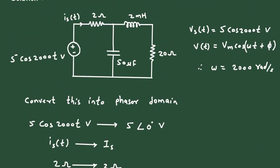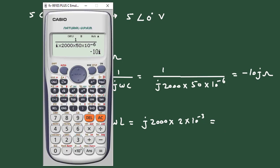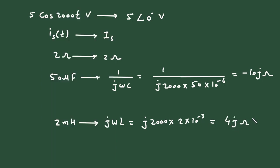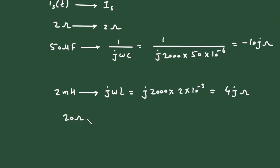The 2 mH inductor will change to jωL = j × 2000 × 2×10⁻³, which equals 4j ohms. The 20 ohm resistor will remain 20 ohms since it is a resistance.